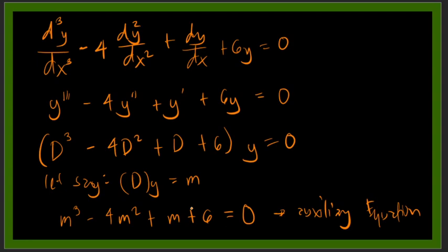There are four types of roots: distinct real roots, repeated real roots, distinct imaginary roots, and repeated imaginary roots. We will discuss those types of roots and find the general solution for the corresponding HODE of each auxiliary equation. I hope you learned something from this video, and as always, enjoy learning.